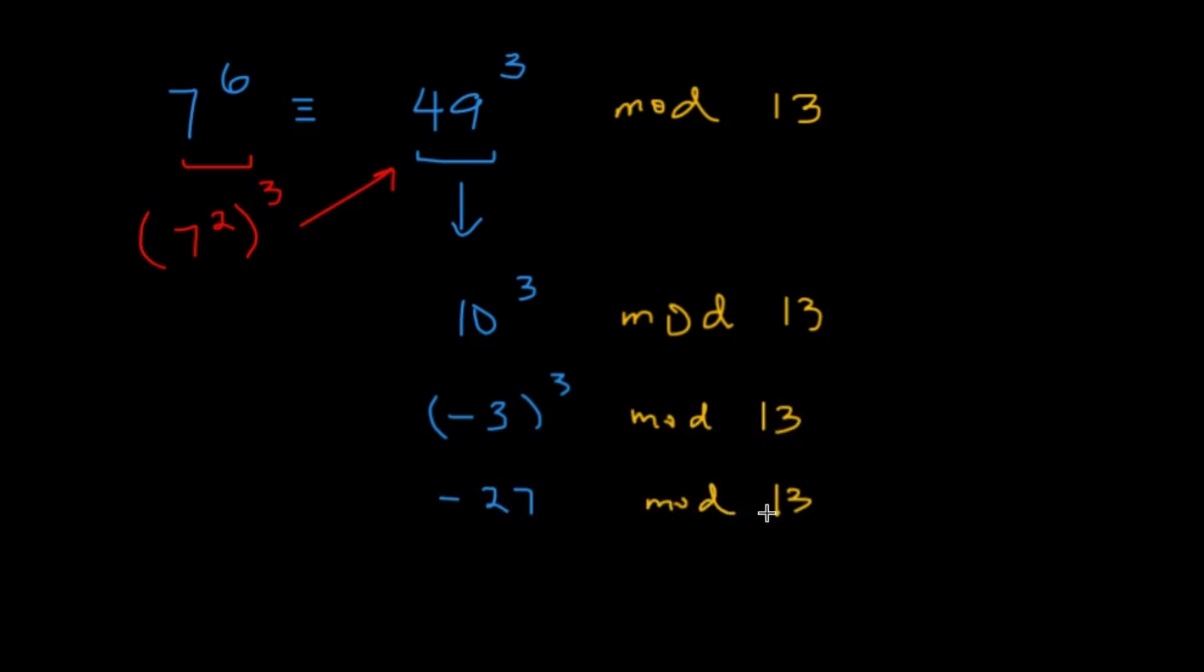And for our last step, since we want a valid remainder, we can add 39 to this negative 27, and I'll get 12. So adding 39 to this negative 27, I'll get 12 mod 13. So following this series of congruences here, I would get that 7 raised to 6 leaves a remainder of 12 when divided by 13. Because they are congruent under mod 13.